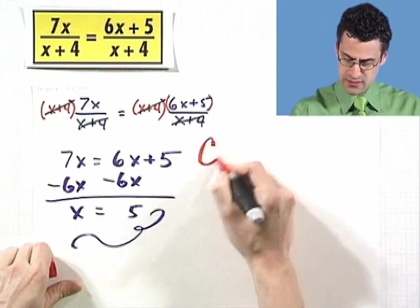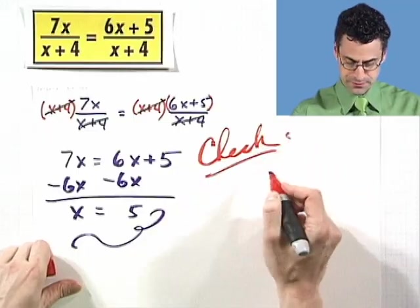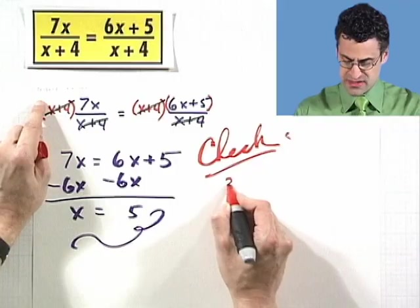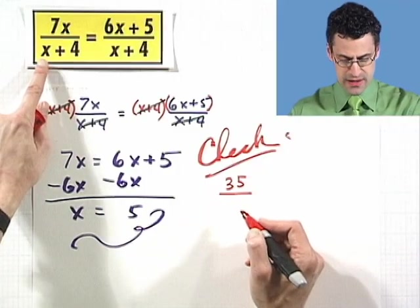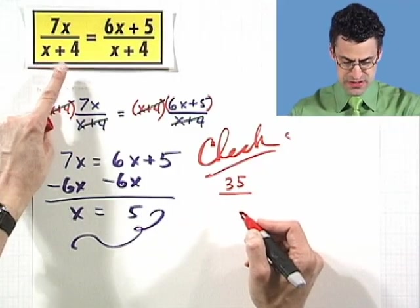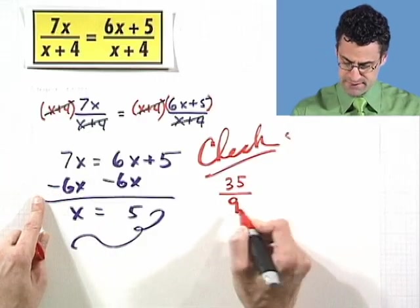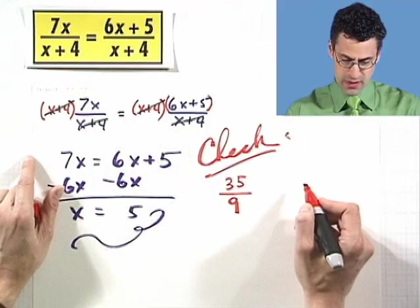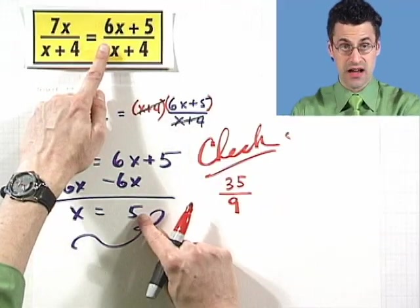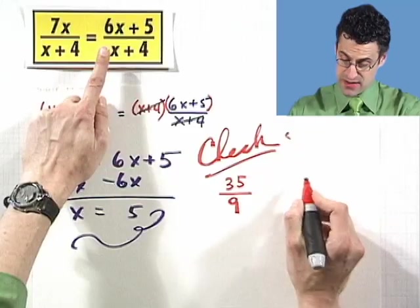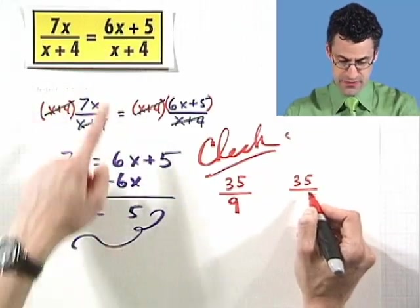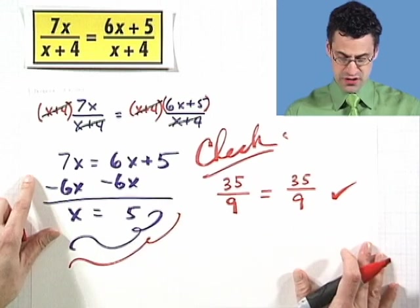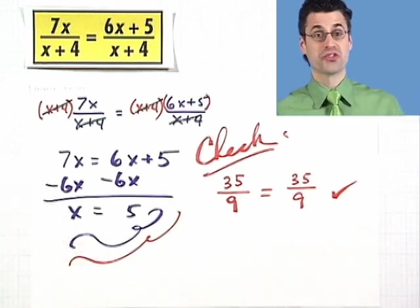Let's do a quick check. Put a 5 in for x: 7 times 5 is 35, divided by 5 plus 4 is 9. Does that equal the right side? Put a 5 in for x there: 6 times 5 is 30, plus 5 is 35, divided by 5 plus 4, which is still 9. It sure checks. So the answer is x equals 5.